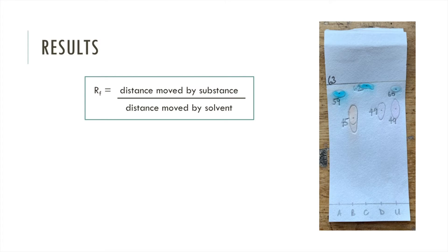So here's a photo of my final chromatography paper. Now we're going to calculate the different RF values. Remember RF is calculated by dividing the distance travelled by the compound by the distance travelled by the solvent.